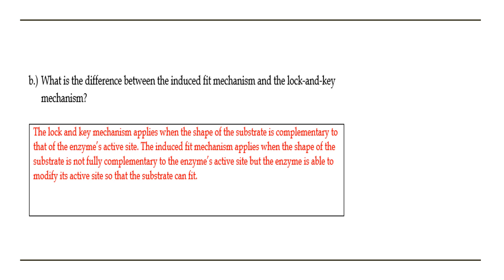This question asks what is the difference between the induced fit mechanism and the lock and key mechanism. The lock and key mechanism is the very common one, which basically means that the substrate has a shape that fits the active site of the enzyme, pretty much like the key of your door fits into the lock. The induced fit mechanism, on the other hand, is when the substrate doesn't really fit into the active site of the enzyme, but the enzyme is able to modify itself so that the substrate fits — it induces the fit, allowing itself to change a bit so that the substrate can fit in perfectly and the reaction can take place.